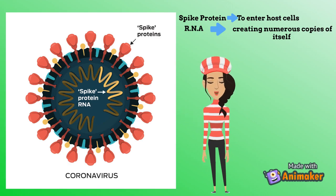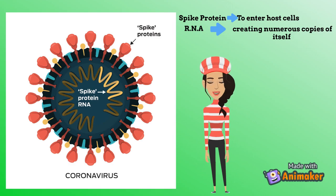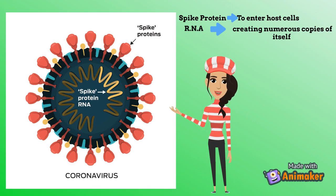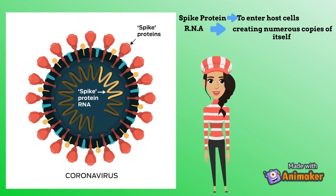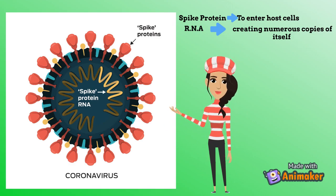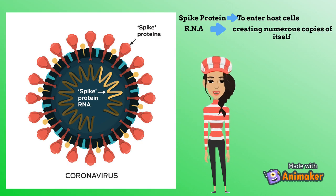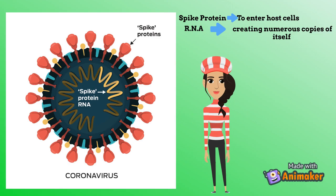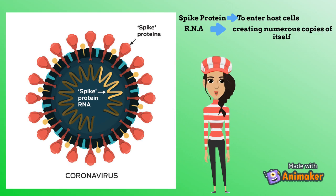DNA is like an encyclopedia of all genetic information for a cell — it contains everything there is to know about a person. RNA is like a photocopy of a single topic. Sometimes the capsid is surrounded by an additional spiky coat called the envelope. Viruses are capable of latching onto host cells and getting inside them.